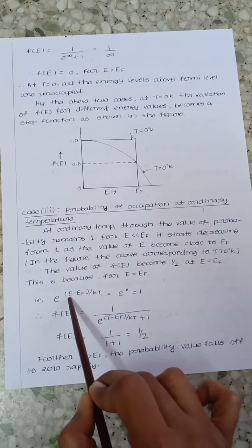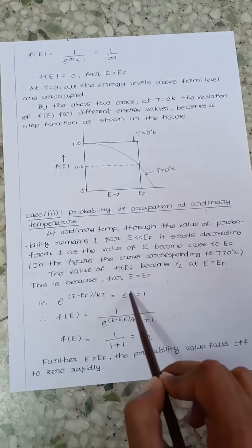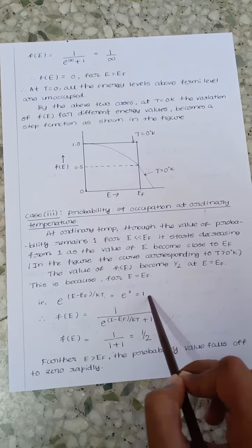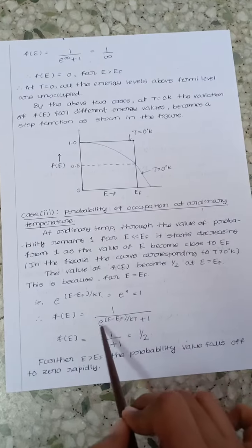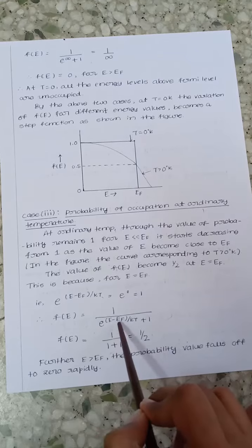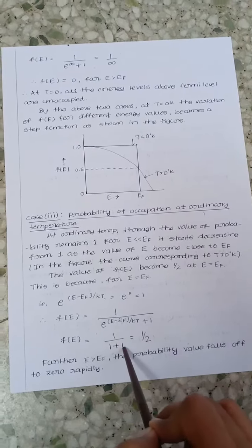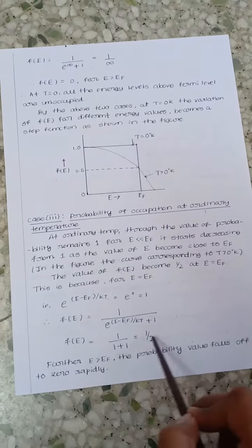So here when E equals EF it will become e to the power of 0. That is nothing but 1. So this part is 1. 1 plus 1 is 2. So F of E equals half.